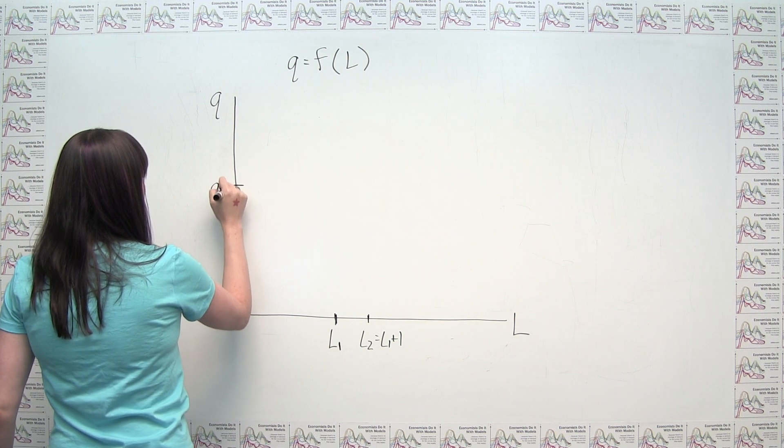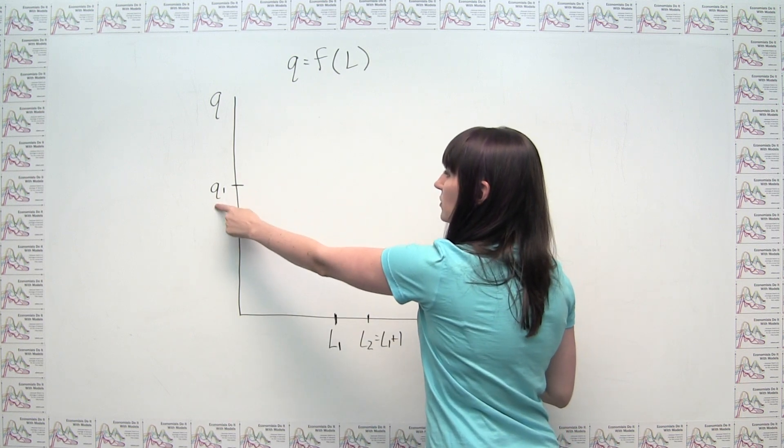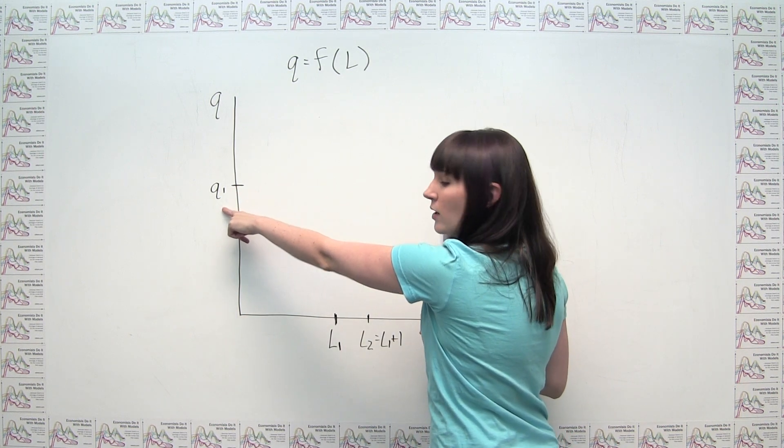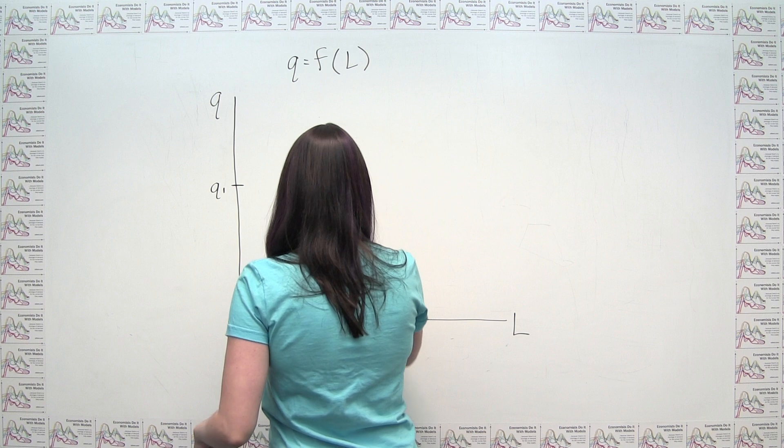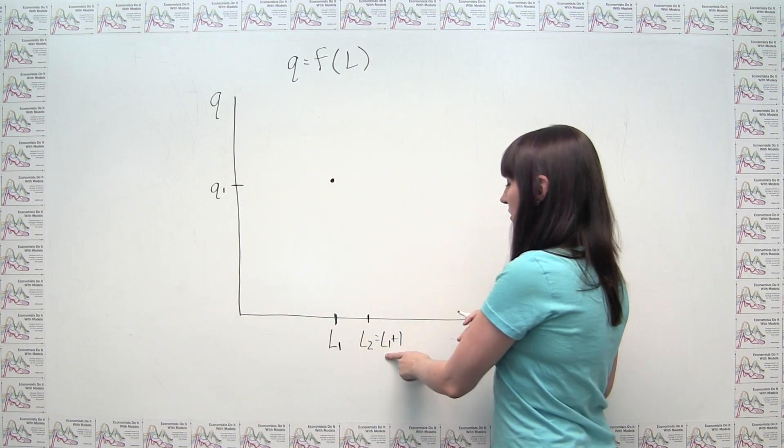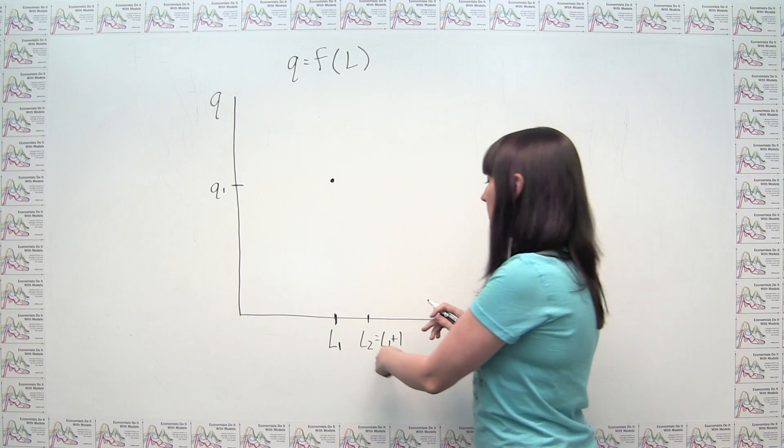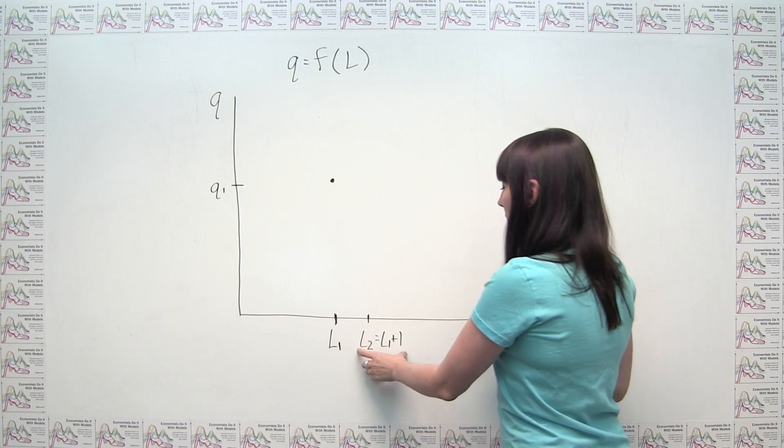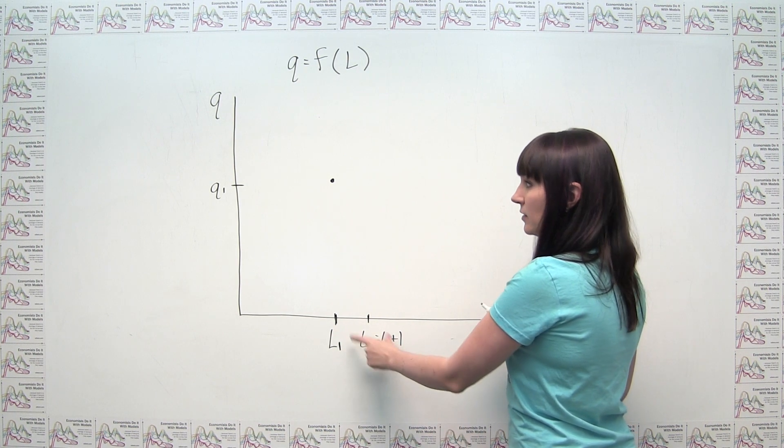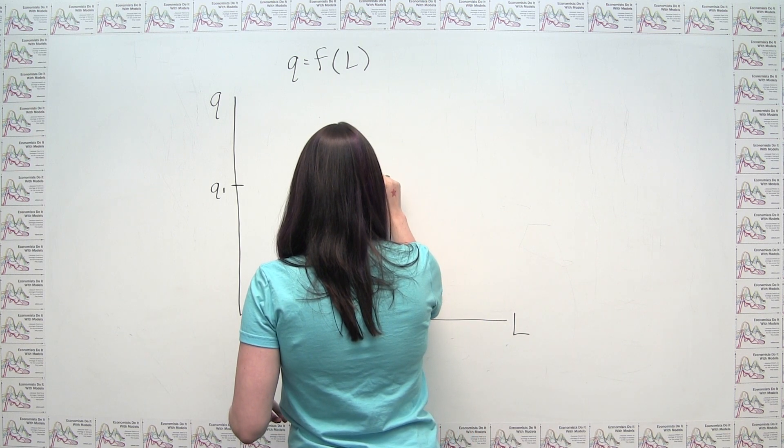If we were at a particular quantity here, just call this Q1, then if we were able to produce output of quantity Q1 with this quantity L1 of labor, and if this additional unit of labor didn't give us any extra output, then it must be the case that the output at this level of labor here is also Q1, right? So we would have something that looks like this.